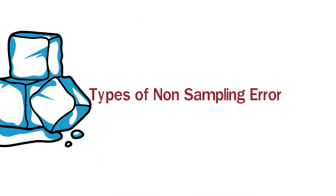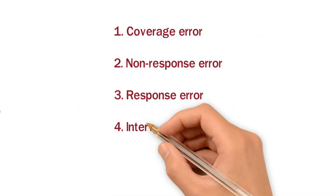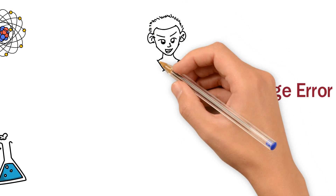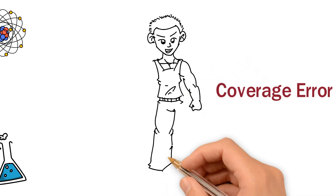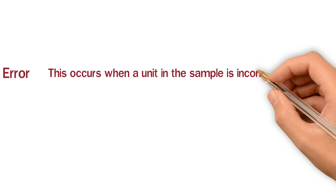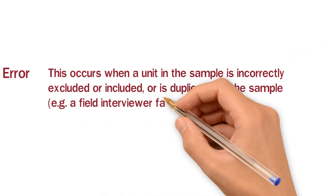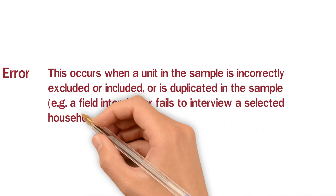We have various different types of non-sampling error, for example: coverage error, non-response error, response error, interviewer error, and processing error. First, we'll go through coverage error. From the name, you can get a little idea — that if we are not able to properly cover a defined area of our sample, the error we get in that case will be a coverage error. This occurs when a unit in the sample is incorrectly excluded, included, or is duplicated in the sample.